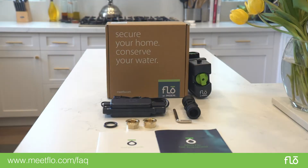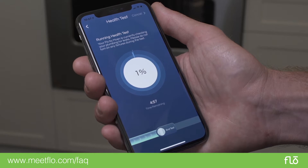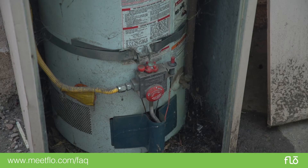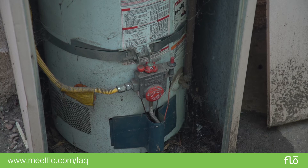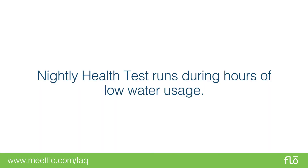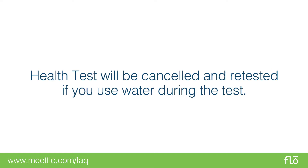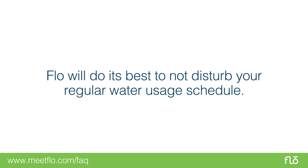One of the main features of your Flow by Moen system is an automatic health test, which is performed every night to ensure your home's plumbing is leak-free. This automatic test will run during the hours when you're least likely to use water, and it will be cancelled and retested should you use any water for the duration of the test. When this is exactly can vary from user to user, as Flow will do its best to not disturb your regular water usage schedule.